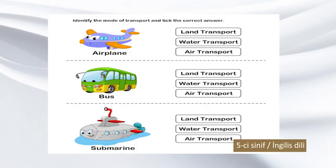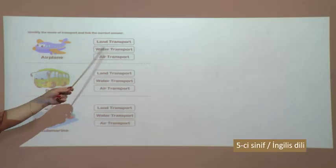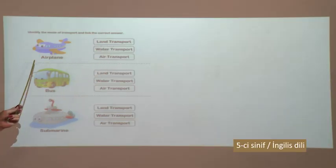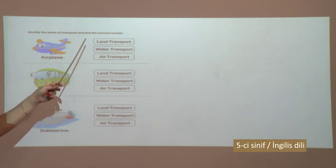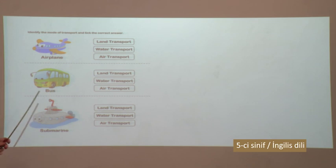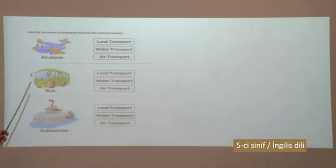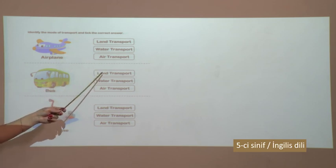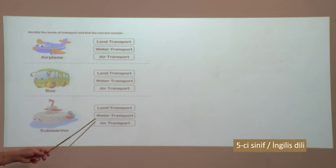Let's find where airplane belongs - land transport, water transport, or air transport? As you see from its name, airplane - it should go to air transport, not land or water transport. Bus - is it land, water, or air transport? Of course, bus goes to land transport. Submarine - it is land, water, or air transport? Of course, it is water transport.